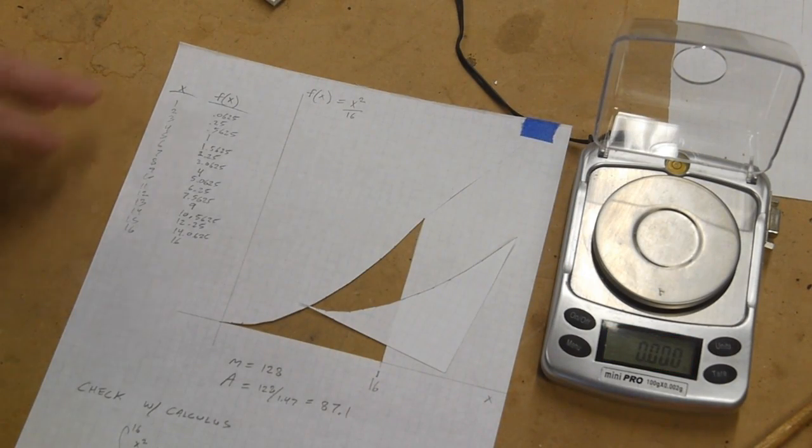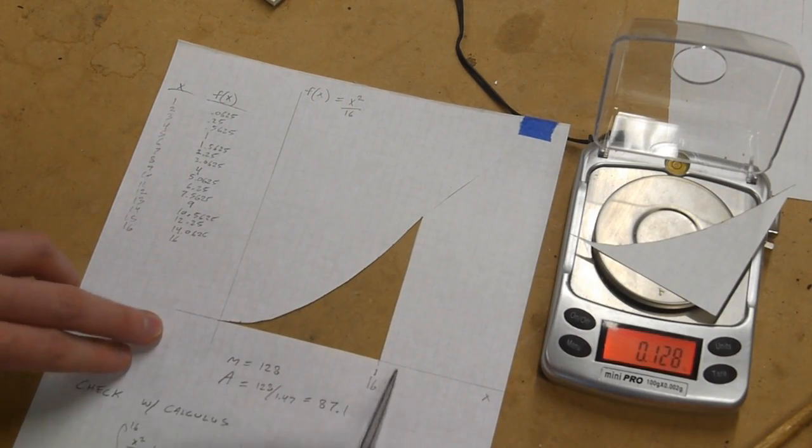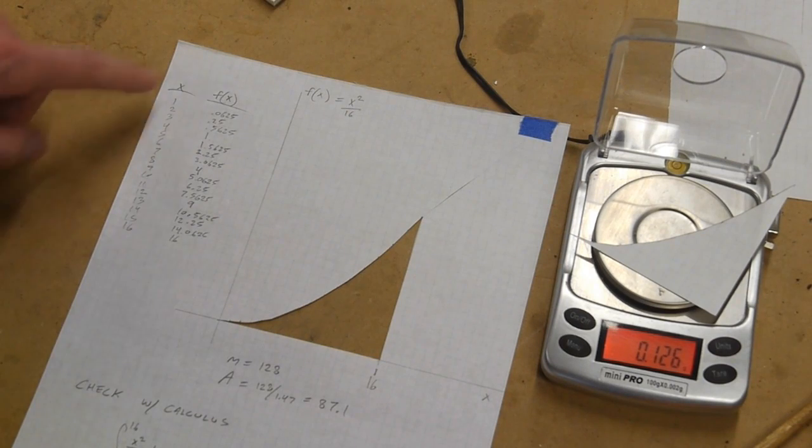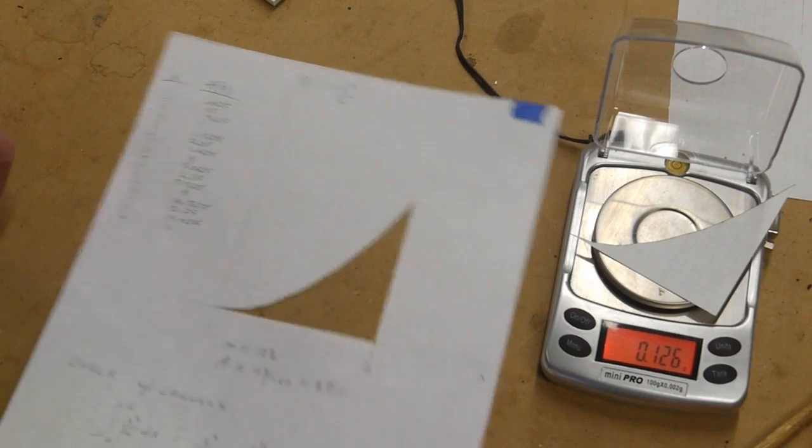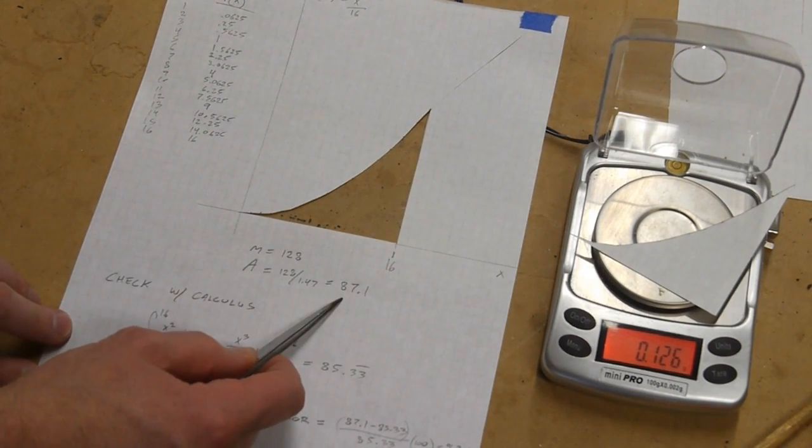Here's a more interesting function. We have f of x equals x squared over 16. And I used the over 16 just to spread this graph out so that it worked out better for my graph paper. And I plotted all the points here and just connected the points with straight lines.